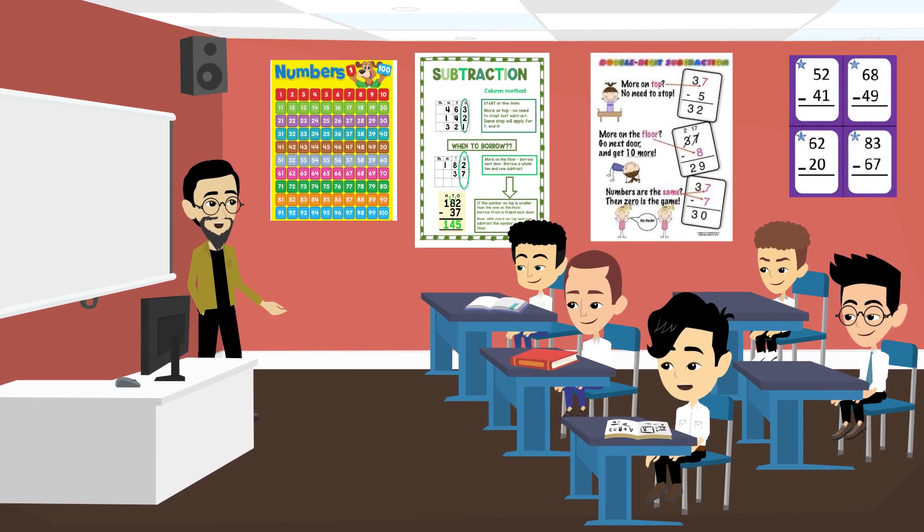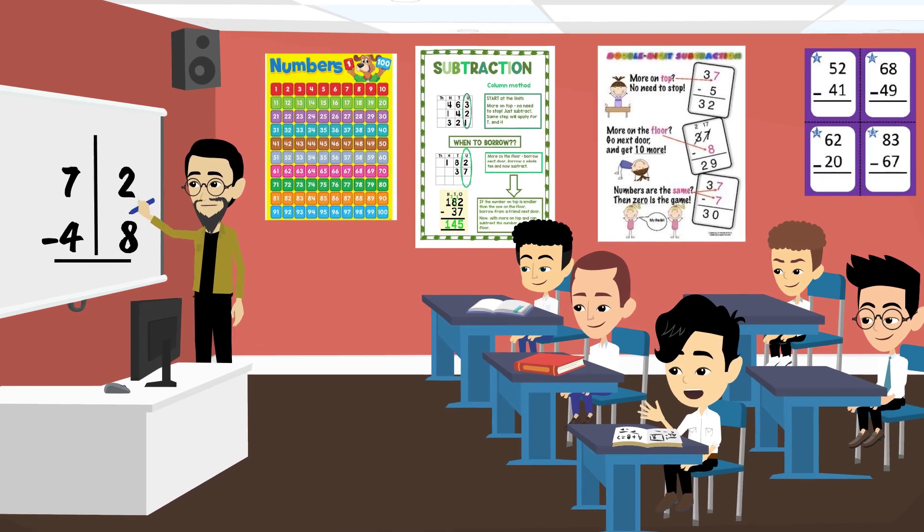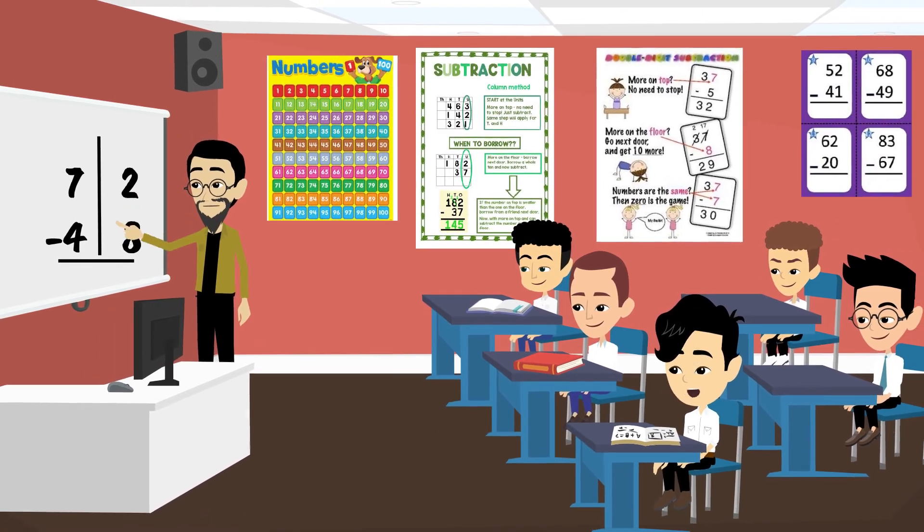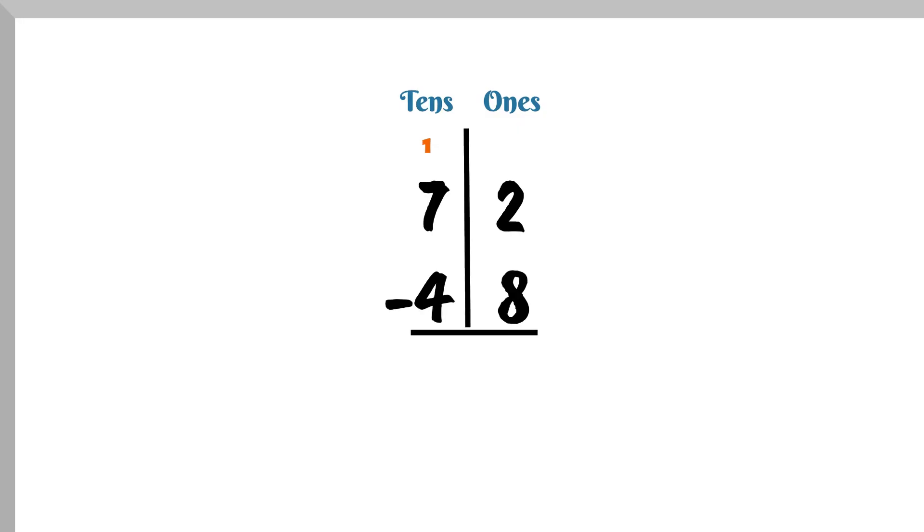Let's do one more together. How about 72 minus 48? Can we subtract 2 minus 8? No. We need to regroup. Right.